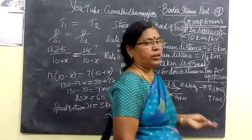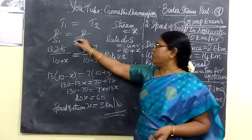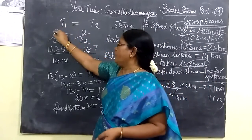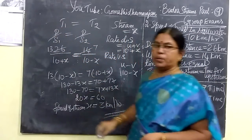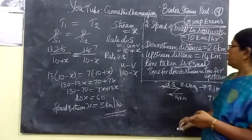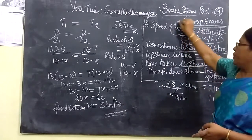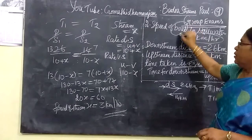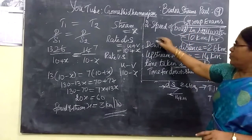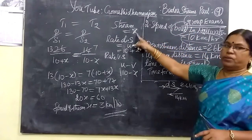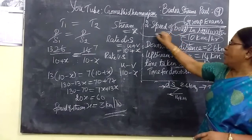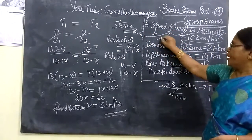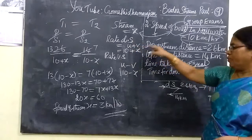This is a very simple problem. One thing you want to keep in mind: distance equals speed into time, or time equals distance by speed. For boats and streams, the speed of the stream — immediately you are adding boat speed for downstream and subtracting for upstream.